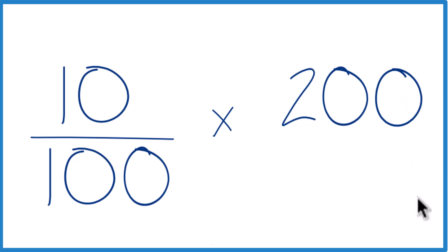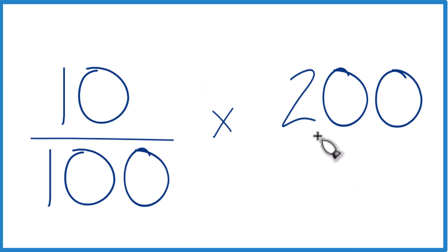Maybe a better way to think about it, though, is we're going to take 10 over 100, that 10%, and multiply it by 200 over 1.